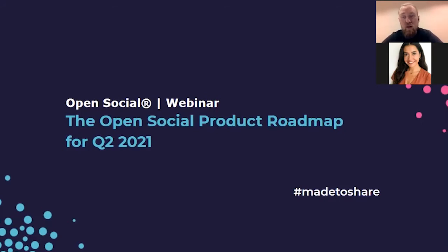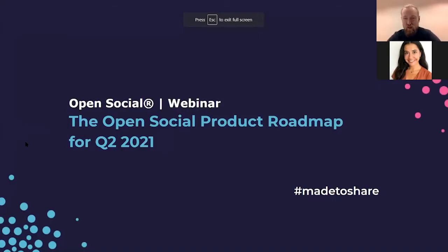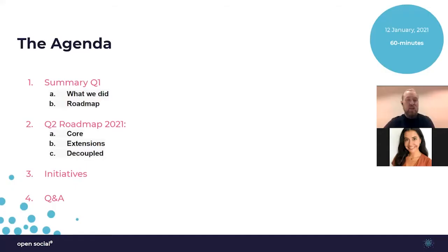There is obviously always a lot more going on in detail — you will be able to see updates in release notes and in communication with customer success managers if you have any questions, or in more detailed updates throughout the quarter. I'm going to start with a quick summary of what we did and give a quick overview of the roadmap I presented last quarter.